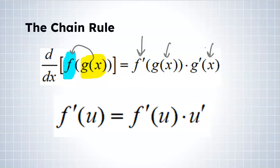Let me explain that with our u notation. I have function u plugged into another function. To find the derivative, I find the derivative of my function with u inside of it, and then I multiply by the derivative of u.